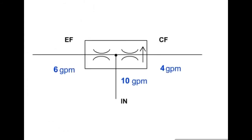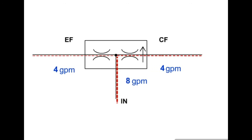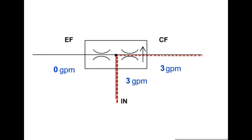The priority or controlled flow port is pressure compensated, but the excess flow port is not. All input flow first goes to meet the required flow of the controlled flow circuit. Flow will remain constant through the controlled flow port as long as it is at least equal to or more than the controlled flow setting. Any extra flow will exit the excess flow port and can be used in another circuit.